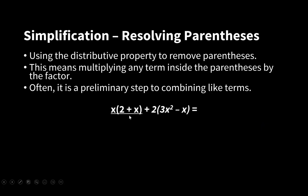For example, x(2 + x) + 2(3x² - x). We multiply x by 2 and x to get, and we multiply 2 by 3x² and x, and we get 2x + x² + 6x² - 2x.